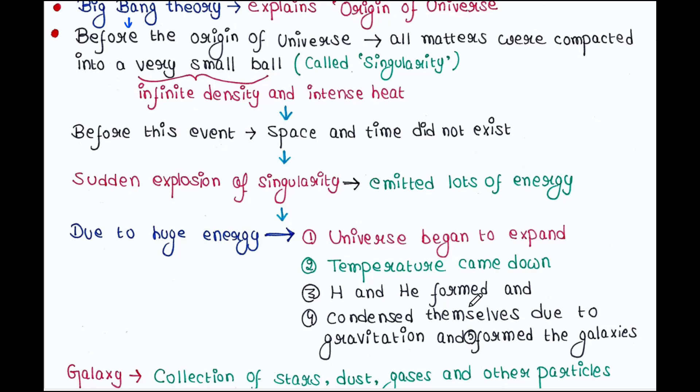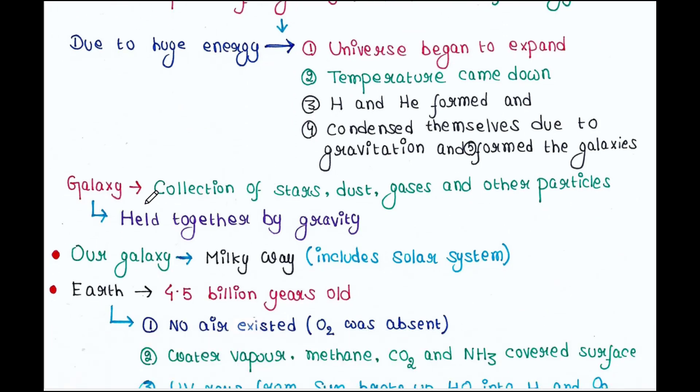The temperature came down. Hydrogen and helium formed and condensed themselves due to gravitation and formed the galaxies. Galaxy is the huge collection of stars, dust, gases and other particles. Stars form from an accumulation of gas and dust, which collapse due to gravity. Galaxies are held together by gravity. Our galaxy is the Milky Way, which includes the solar system.